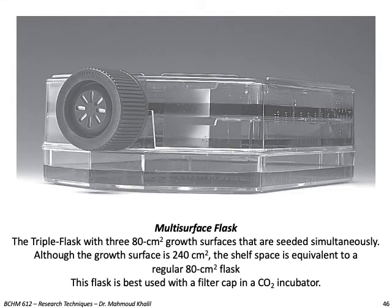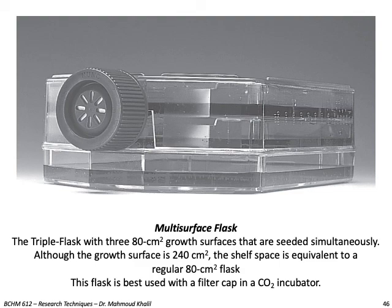Another type of flask is the multi-surface flask. It is a triple flask with three 80 cm² growth surfaces that are seeded simultaneously. Although the total growth surface is 240 cm², the shelf space is equivalent to a regular 80 cm² flask. This flask is best used with a filter cap in a CO2 incubator. The advantage is saving flask count and space inside the incubator.